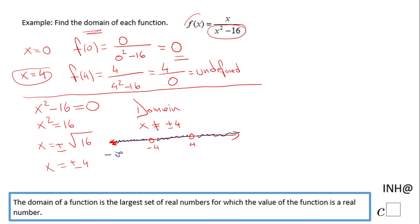We have negative infinity here and infinity here. So we're going to have negative infinity to negative 4, both with parentheses, union of negative 4 to 4, again parentheses on both, union of 4 to infinity. And this is the domain in interval notation.